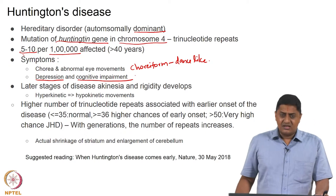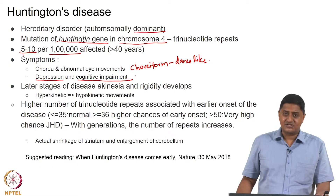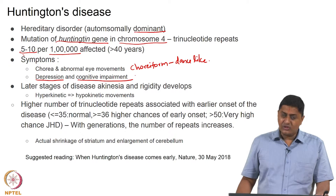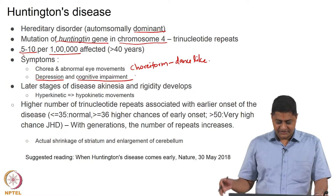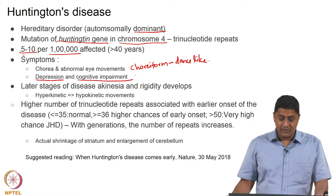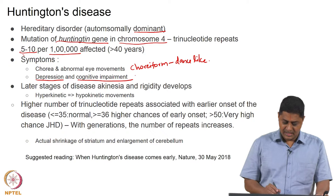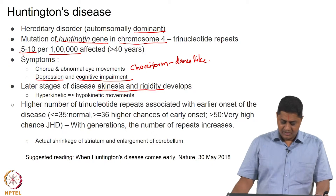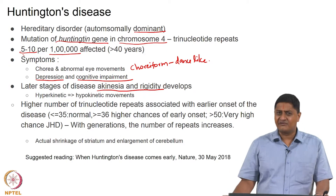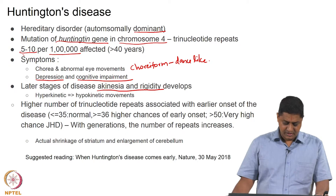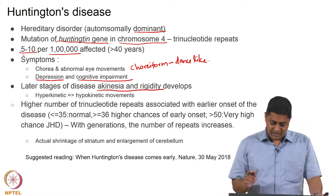Although the exact details of the non-motor dysfunctions have not been fully understood, the motor form has been documented relatively well. In the later stages of the disease, a hypokinetic form develops — akinesia and rigidity — a phenotype involving rigidity and akinesia, which leads ultimately to death. Usually death happens about 15 to 20 years after onset.